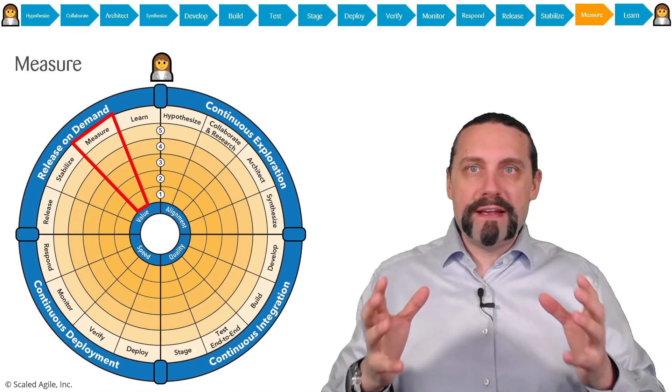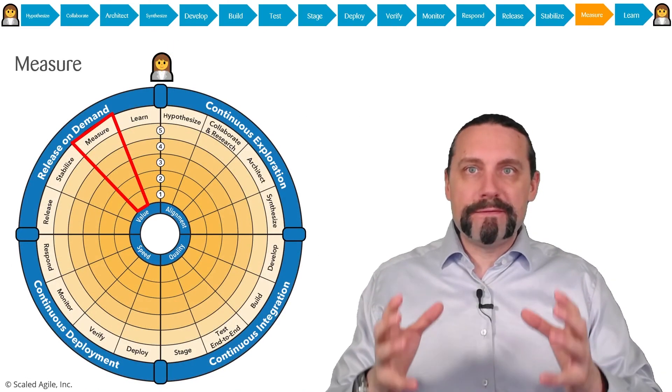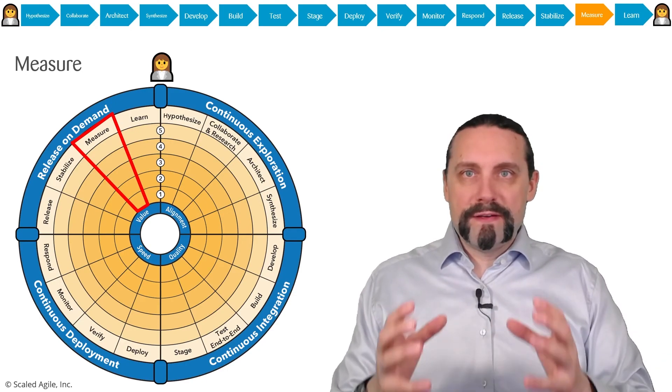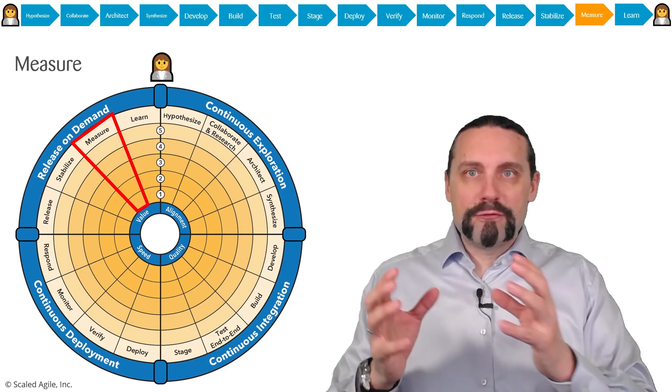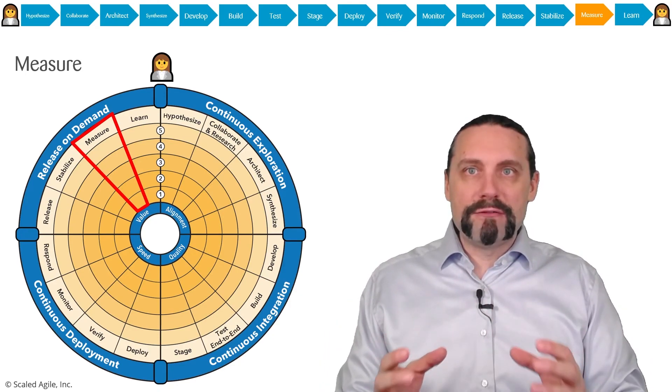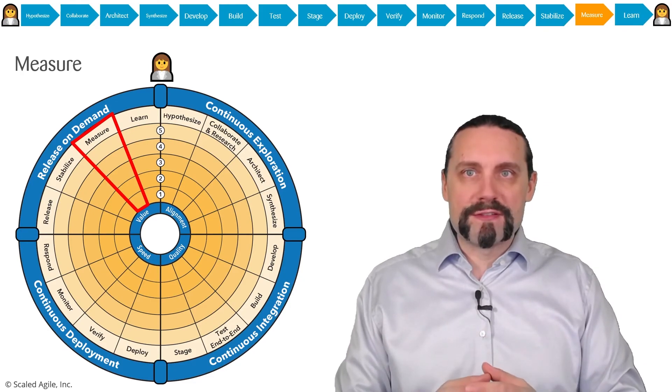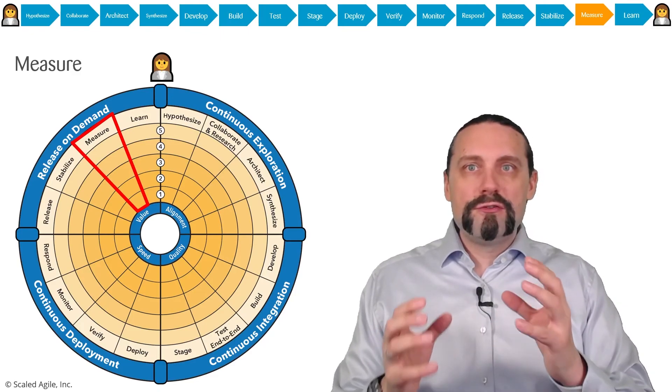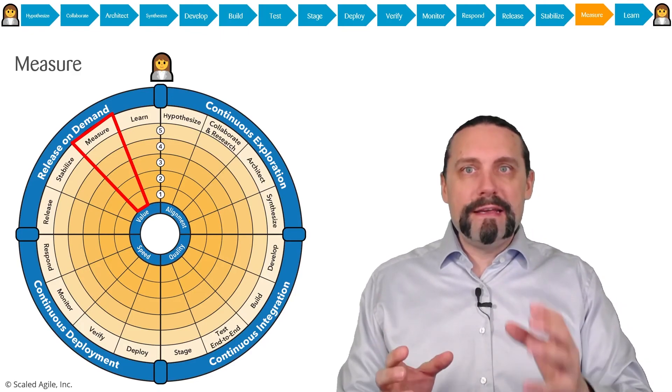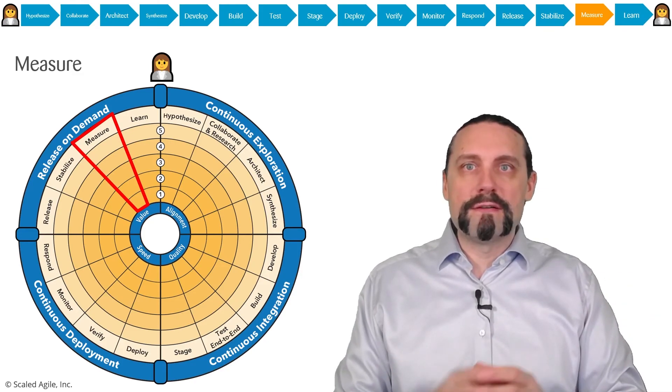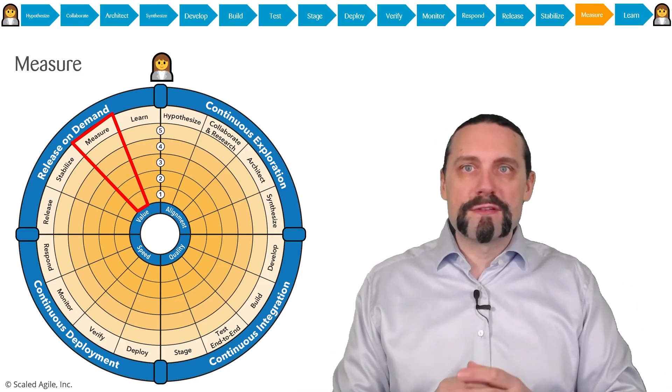In the measure step, everything from the SAFe for DevOps health radar comes together. Here we're going to collect quantitative and qualitative information about our epics and features in production.